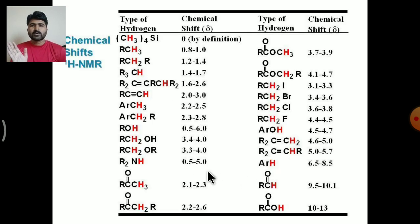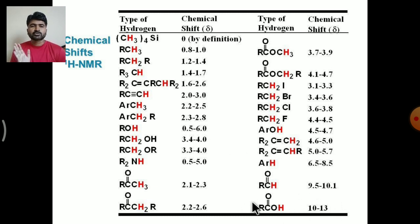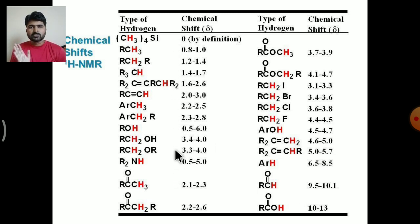Looking at this chart, TMS is at 0 delta and as you go down the table the delta value increases, up to the last molecule which is carboxylic acid showing delta 10–13. Why delta values are higher or lower can be understood with the help of shielding and deshielding parameters.